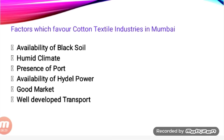Jute is also known as the golden fiber — it is renewable, natural, biodegradable, and eco-friendly. Jute industries are mainly located in the Hooghly River Basin because the industry needs fresh water for the retting process. In the retting process, they remove the jute fiber from the bark of the plant.